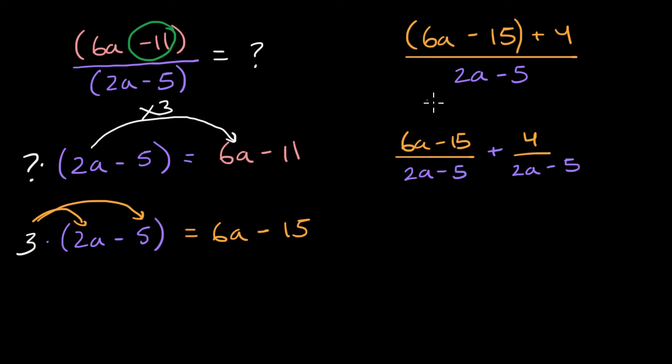All I did is I have the same denominator here, so I could just add the numerators. But this is really useful because we just figured out that this whole thing right over here, (6a - 15) over (2a - 5), is the same thing as three.